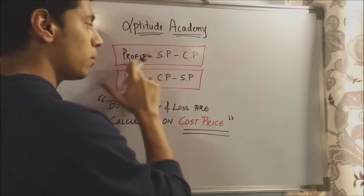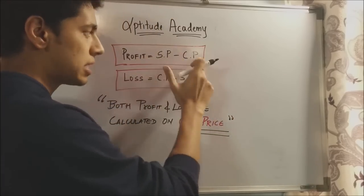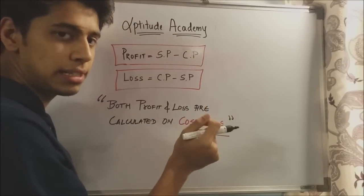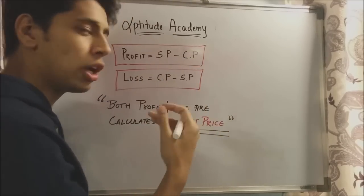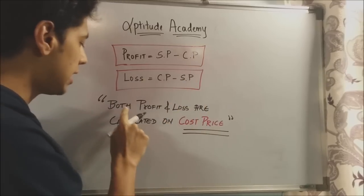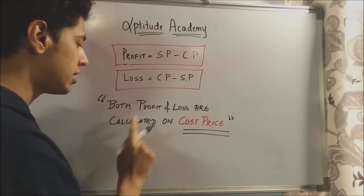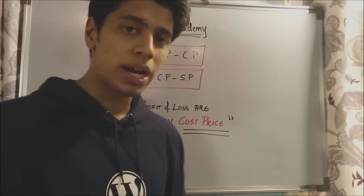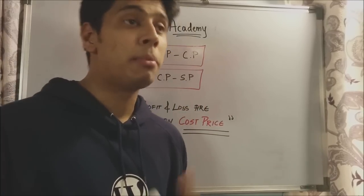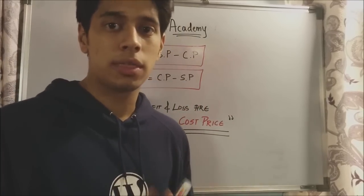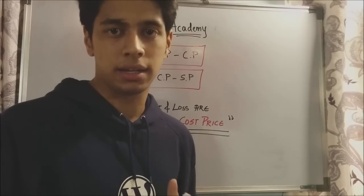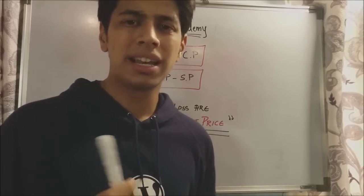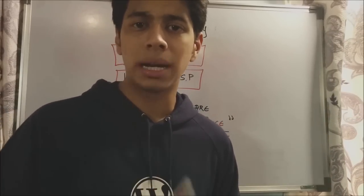So profit equals selling price minus cost price, and loss equals cost price minus selling price. Now, you must have heard that both profit and loss are always calculated on the cost price. Sometimes we memorize this and then forget in the exam on what to calculate it. Let me explain the concept behind it.